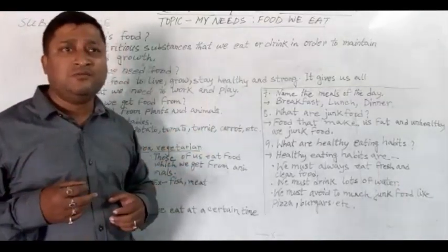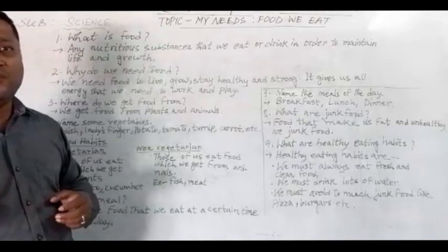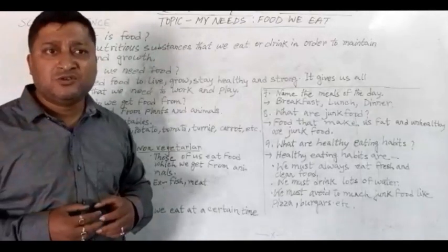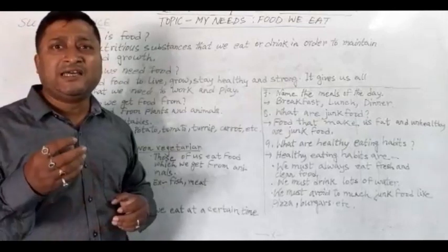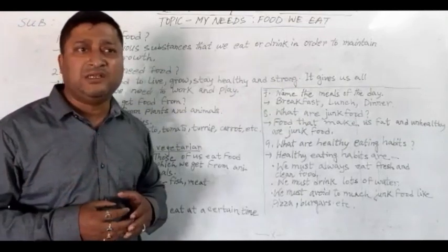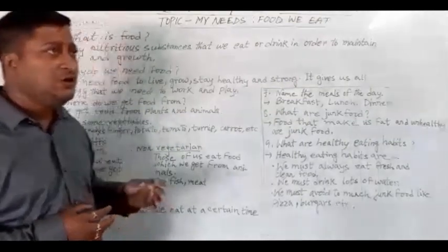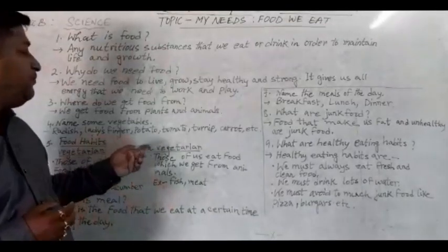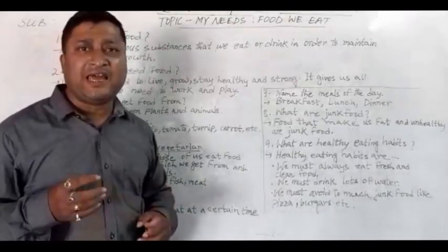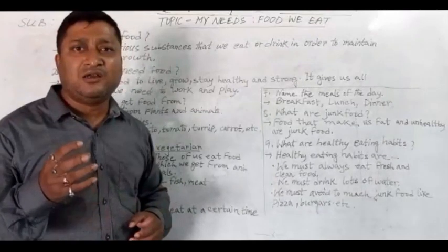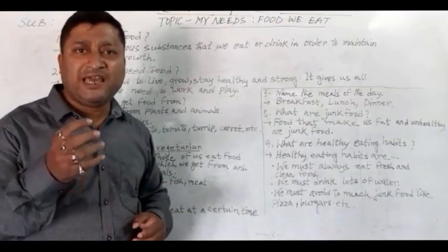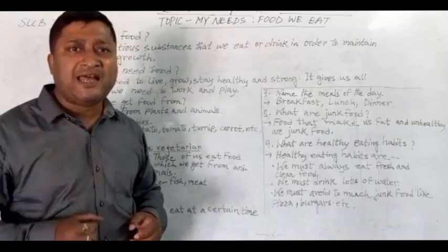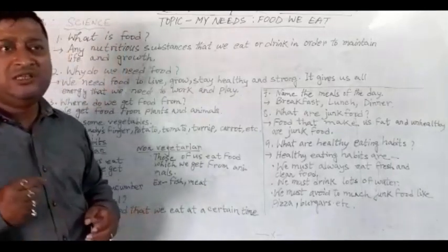There are some foods that we call vegetables. We can get vegetables from plants only. Some vegetables are radish, lady's finger, potato, tomato, turnip, carrot, etc. — we collect these from plants.